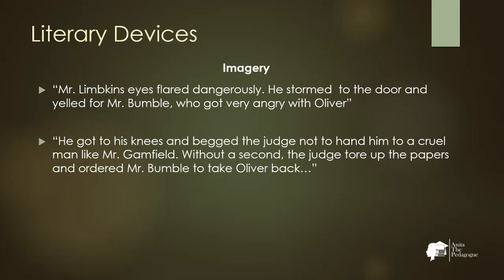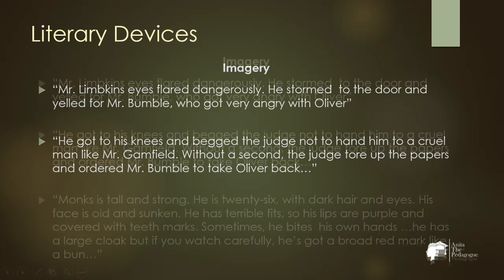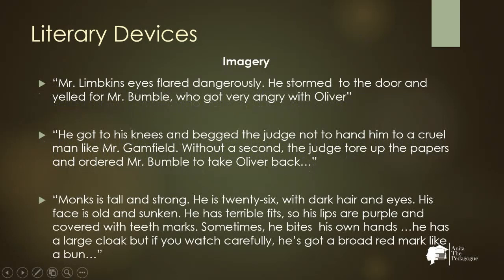More imagery: 'Without a second thought, the judge tore up the papers and ordered Mr. Bumble to take Oliver back.' Also describing Monks: 'He is tall and strong, 26 with dark hair and eyes. His face is old and sunken. He has terrible fits, his lips are purple and covered with teeth marks. Sometimes he bites his own hands. He has a large cloak, and a broad red mark like a burn on his throat.'